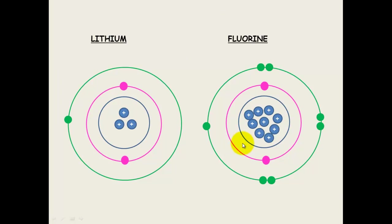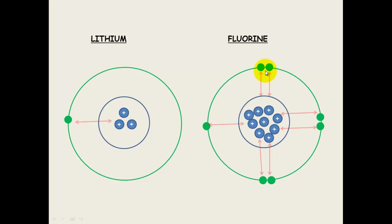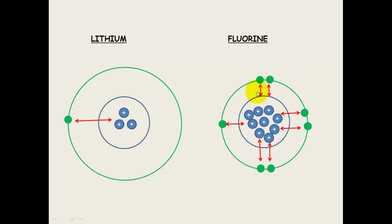If we compare lithium and fluorine, and we ignore the inner shell electrons and just look at the protons in the middle — the positive charge — and the electrons on the outside, we can see that there's more attraction from the protons in fluorine than from the three protons with one electron on the outside in lithium. It's like having more magnets in the middle; it can pull the electrons in more closely.